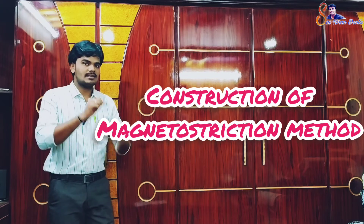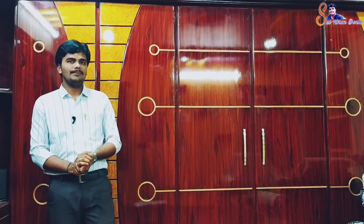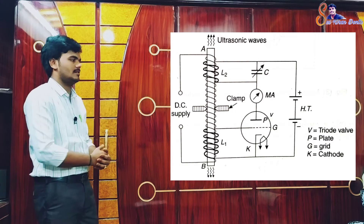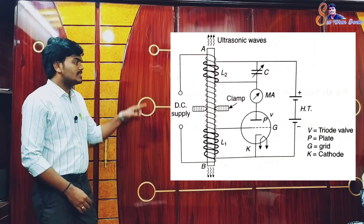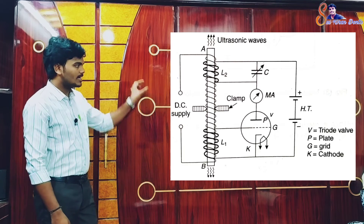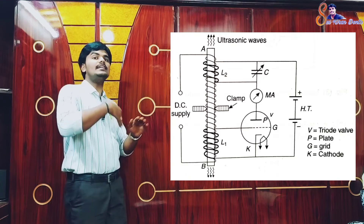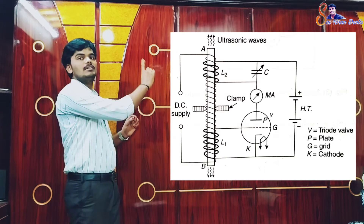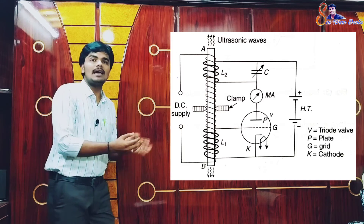Now we can see the construction of this magnetostriction method. An experimental arrangement to produce ultrasonic waves is shown in this figure. There is a short nickel rod AB which is clamped at its center. The rod is permanently magnetized in the beginning by passing direct current in the coil which is wrapped around the rod along its entire length.